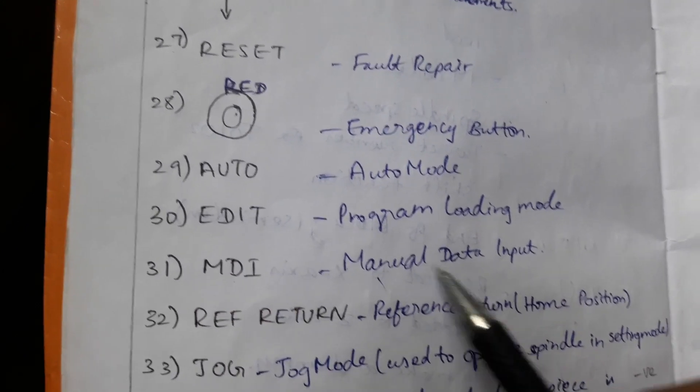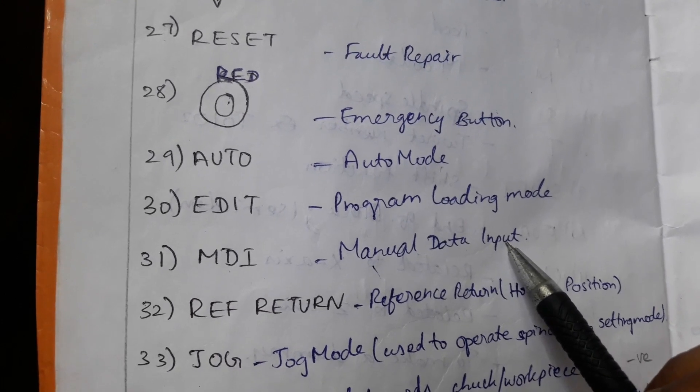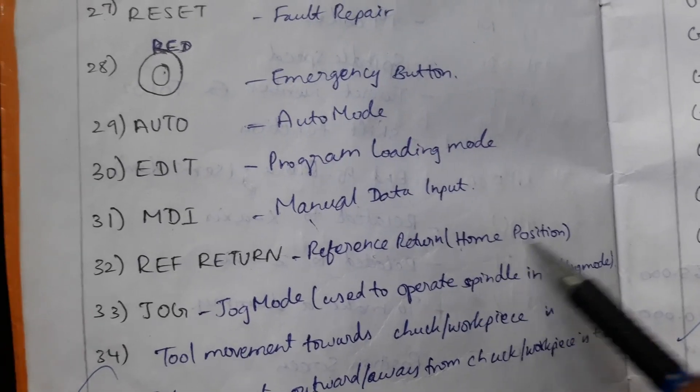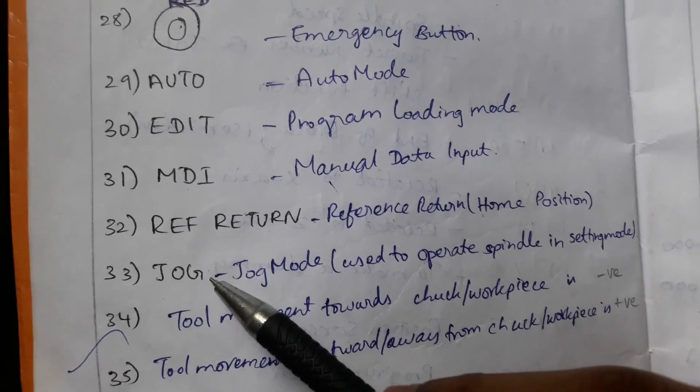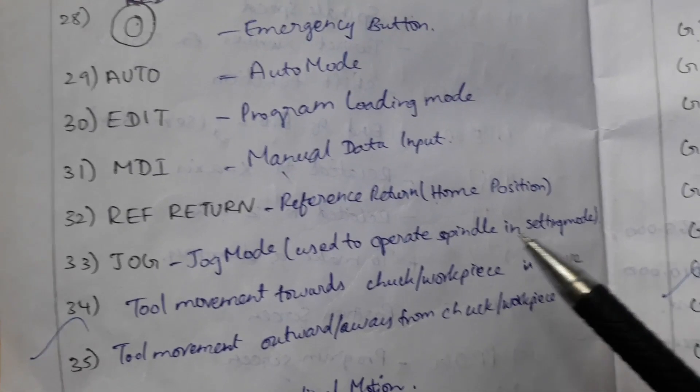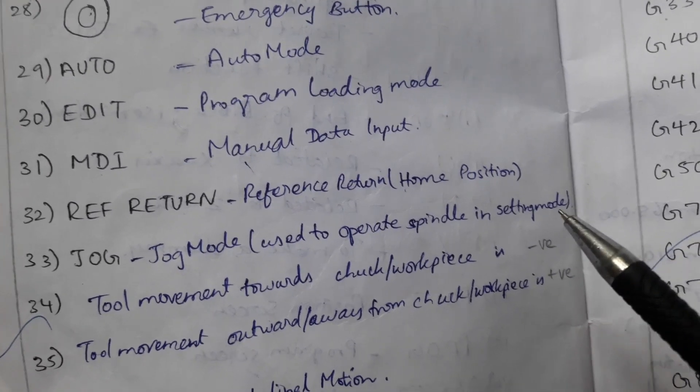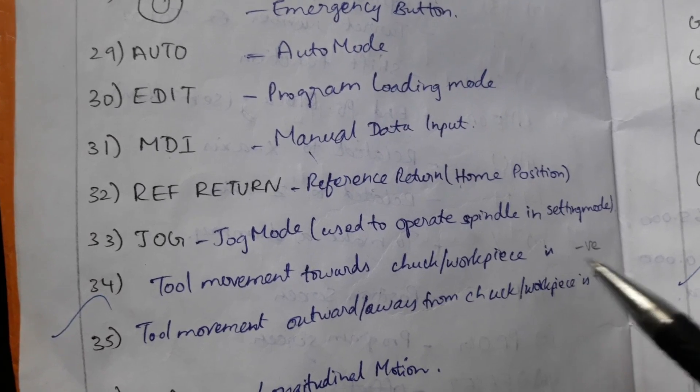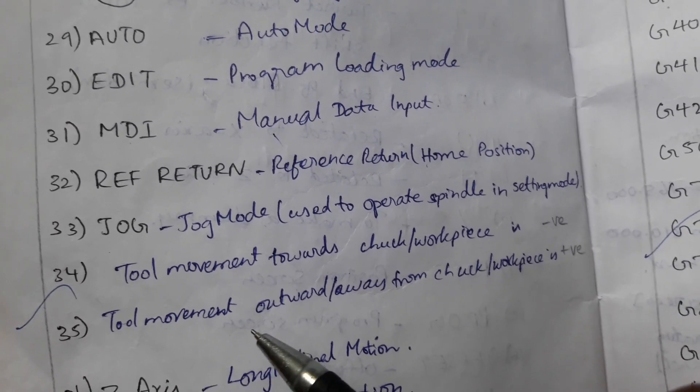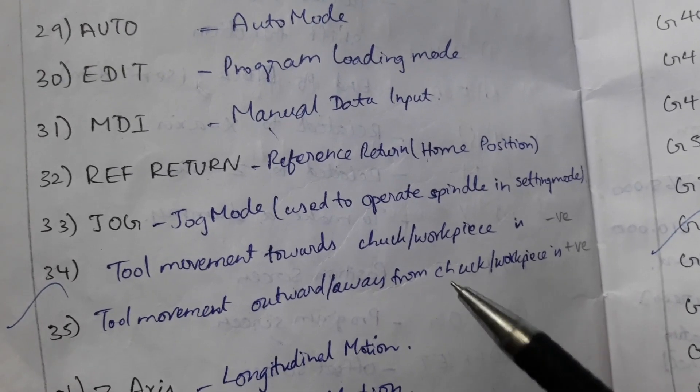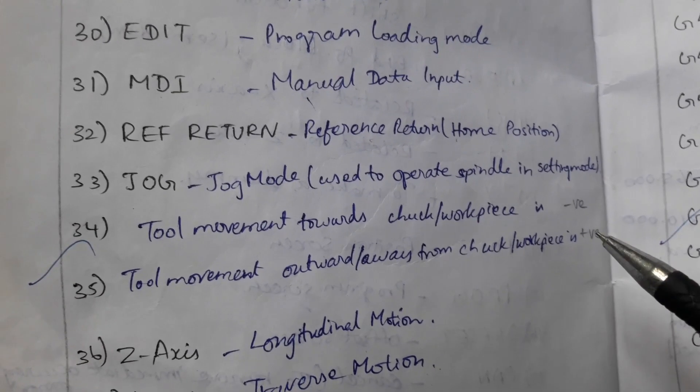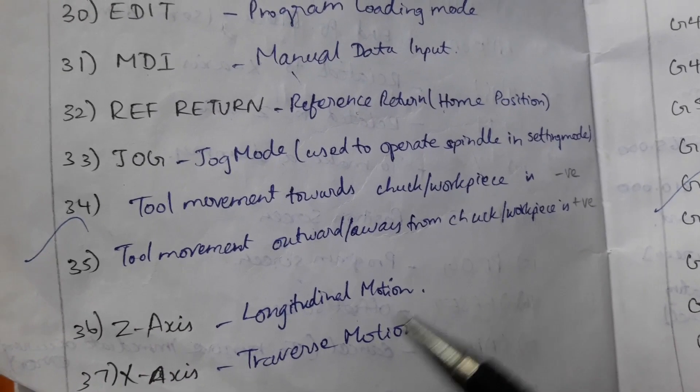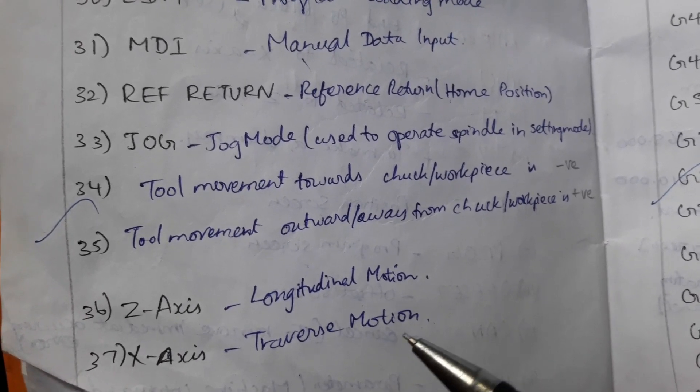EDIT is program loading mode. MDI, manual data input. REF RETURN, that is the reference return home position. JOG mode, used to operate spindle in setting mode. Tool movement towards chuck or workpiece is negative. Tool movements outwards or away from the chuck or workpiece is taken as positive. Z axis is longitudinal motion. X axis is traverse motion.